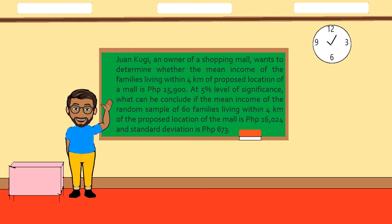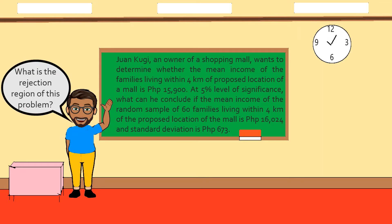Let's have an example. Juan Kugi, an owner of a shopping mall, wants to determine whether the mean income of the families living four kilometers of the proposed location of a mall is fifteen thousand nine hundred pesos. At a five percent level of significance, what can he conclude if the mean income of a random sample of 60 families is sixteen thousand twenty-four pesos and a standard deviation of 673 pesos? What is the rejection region of the problem?